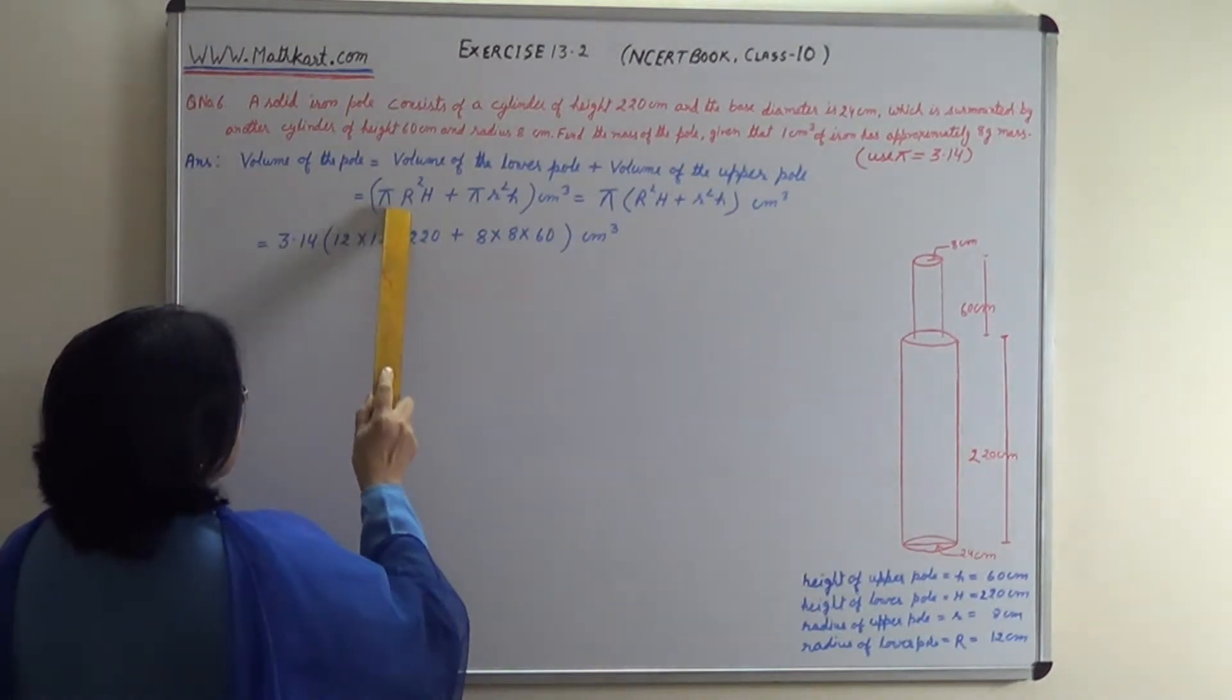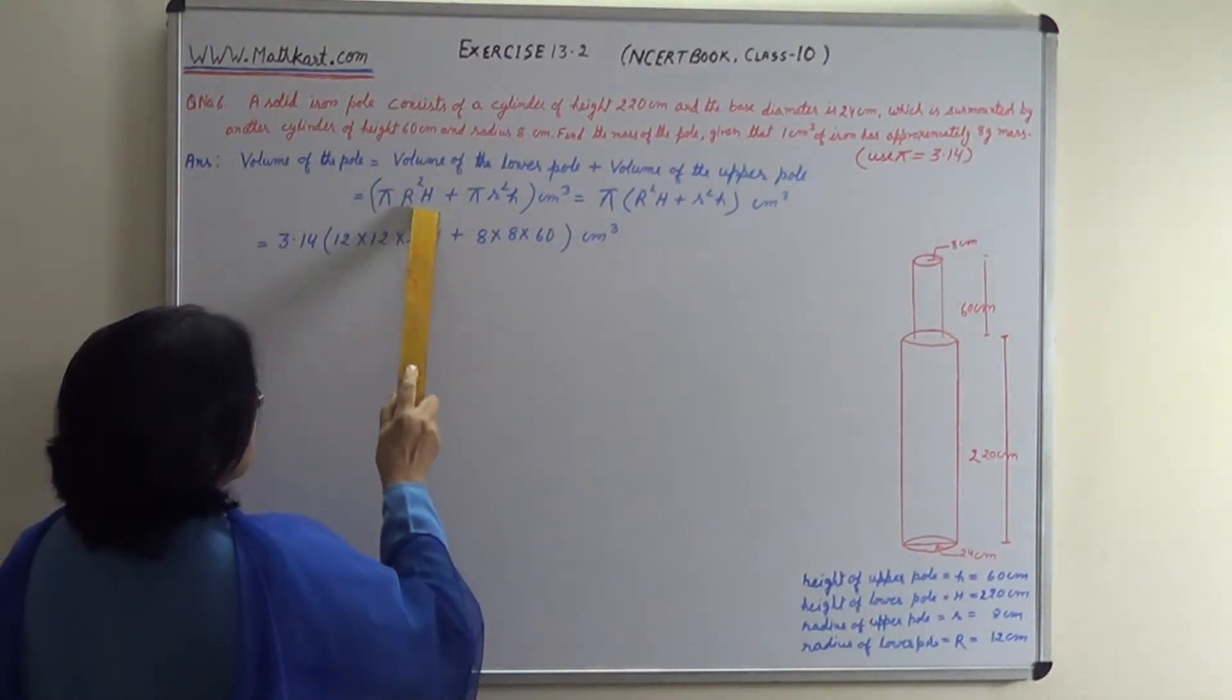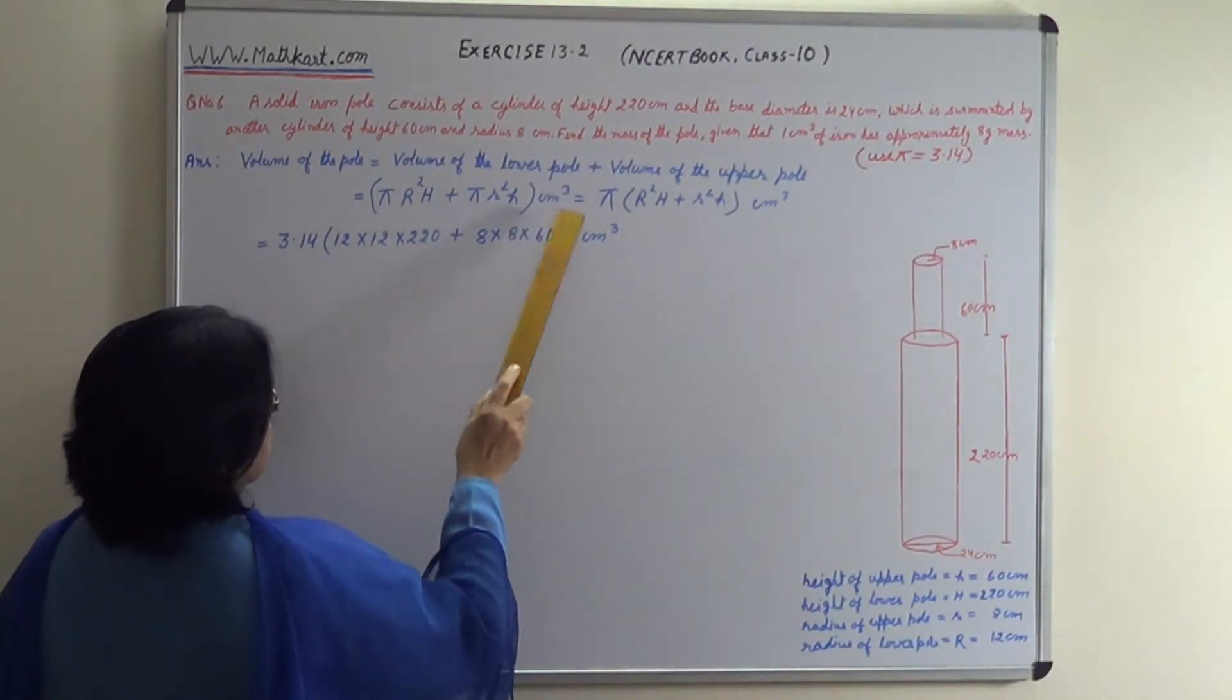This equals pi capital R square capital H plus pi small r square small h cubic cm.